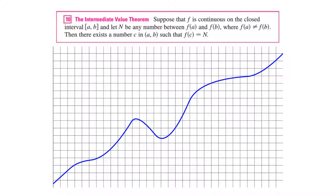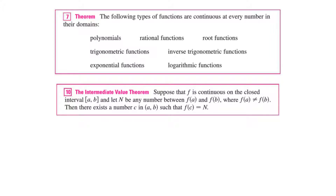Here's a squiggle graph to show this another way. We have two values, a and b. The theorem says that if we want to know whether the function ever crosses c — some value between those two y-values — we can prove it reaches that value, yes, because it's continuous. As long as we have a value at f(a) and at f(b), it's going to cross everything in between. Remember all those continuous function families already in your notes.